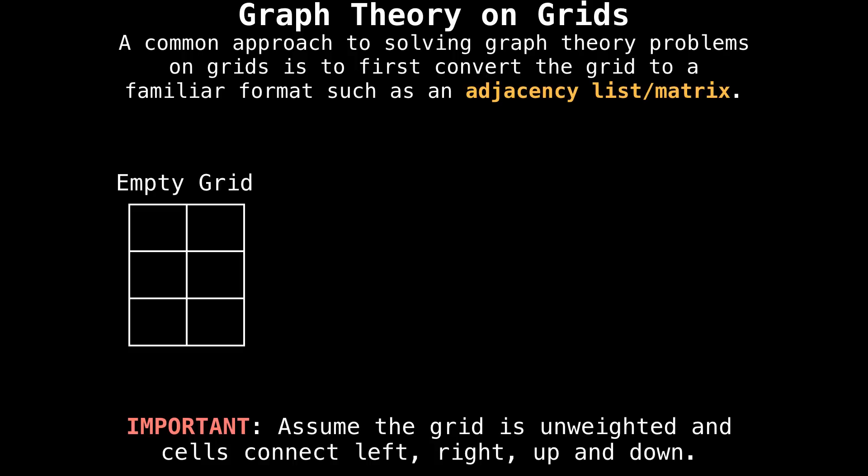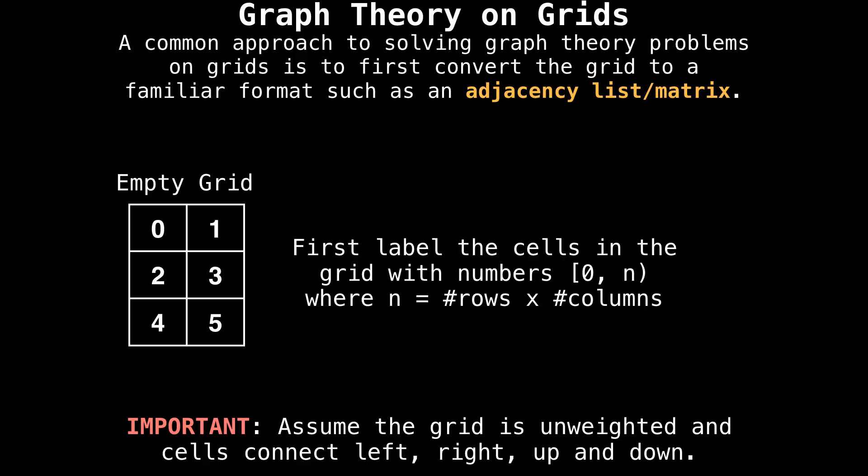Suppose we have a grid on the left and we want to represent it as both an adjacency list and an adjacency matrix. What do we do first? First, you should label all the cells in the grid with the numbers zero through n non-inclusive, where n is the product of the number of rows and columns.